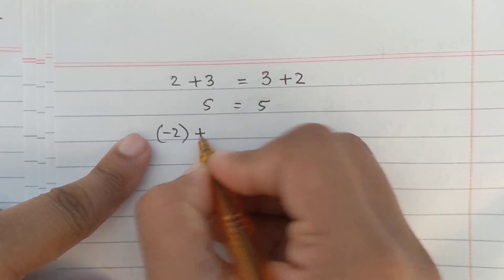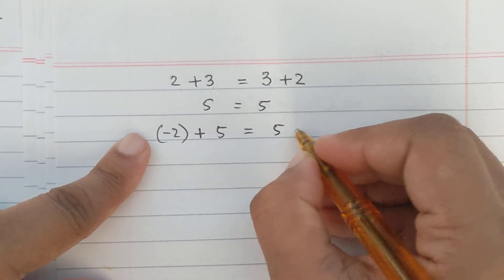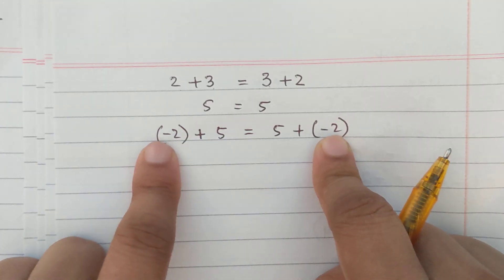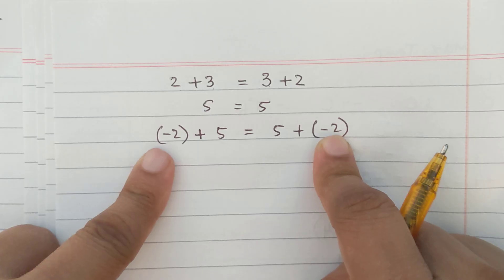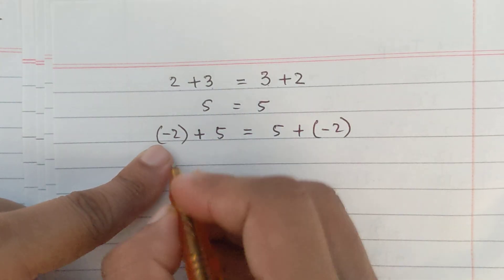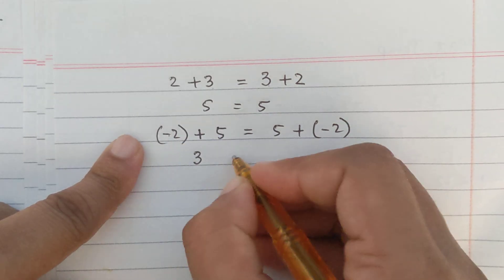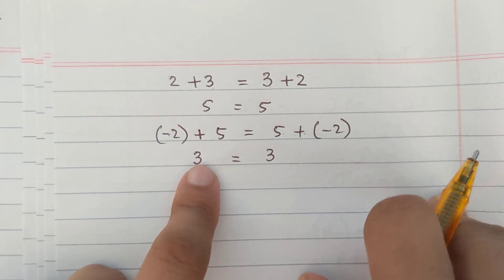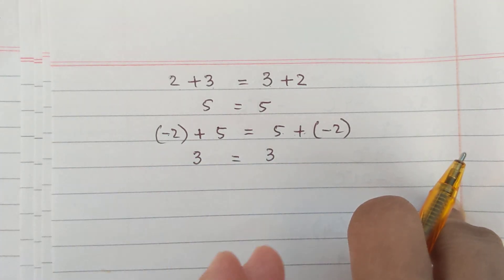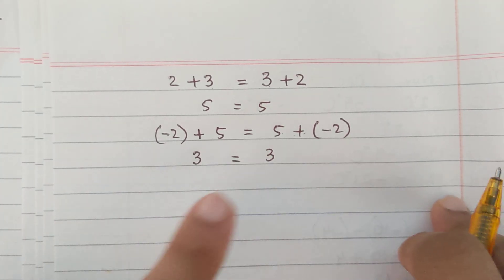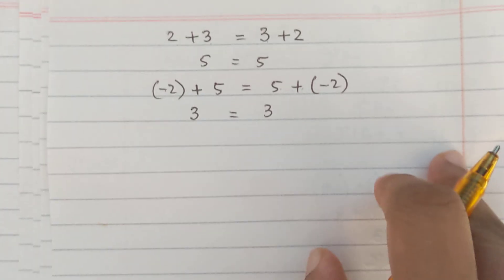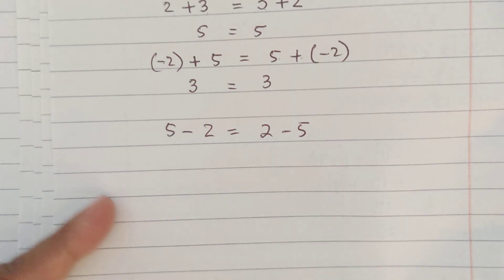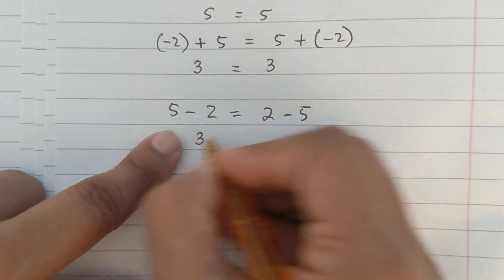Similarly, take minus 2 plus 5 and compare it with 5 plus minus 2. Both numbers are the same — negative 2 and positive 5. Minus 2 plus 5 equals 3, and 5 plus minus 2 also equals 3. This proves that when you add two numbers, their order does not matter — the answer is the same. This is the commutative law of addition. But this law does not apply to subtraction: 5 minus 2 equals 3, but 2 minus 5 equals minus 3, so they are not equal.